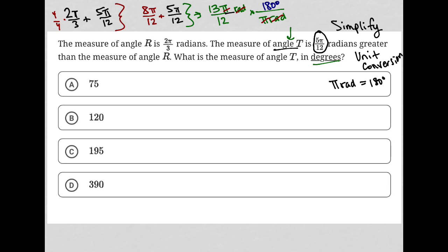So I think that's about done. Now just for some simplification: 12 and 180 can be simplified. 12 goes into 12 once, 12 goes into 180 fifteen times. So all I have left here is 13 times 15. I'm going to go to my calculator to find that answer. 13 times 15 is 195.